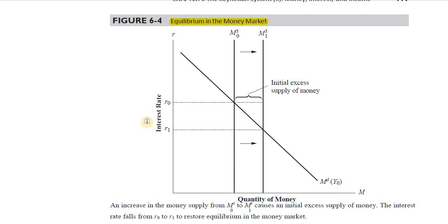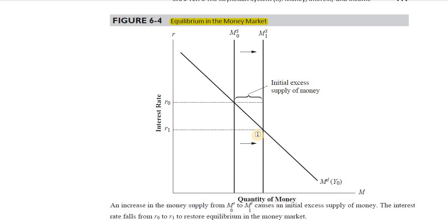Second point — I am assuming we already have a complete hold over everything taught up till now. Why exactly is the money demand curve downward sloping? Why is there an inverse relation between speculative demand for money and the rate of interest? What is the relation between bond price and bond yield? This should be at the tips of our fingers. If you do not know, I am requesting you to please watch the previous videos and do not start watching this abruptly — it will be totally meaningless.